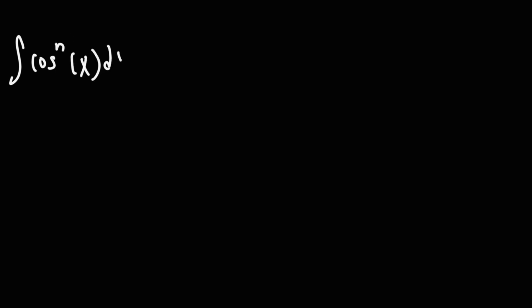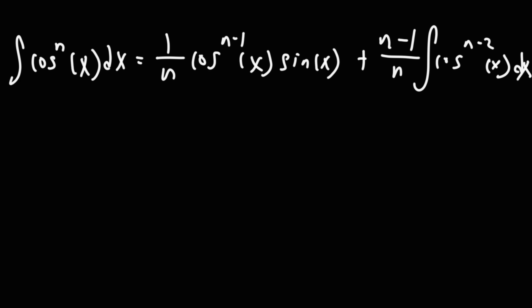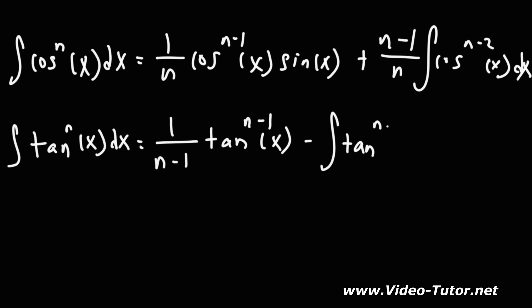The reduction formula for cosine is: the integral of cos^n x dx equals 1/n times cos^(n−1) x times sin x, plus (n−1)/n times the integral of cos^(n−2) x dx. There's also one for tangent: the integral of tan^n x dx equals 1/(n−1) times tan^(n−1) x, minus the integral of tan^(n−2) x dx, where n cannot equal 1.